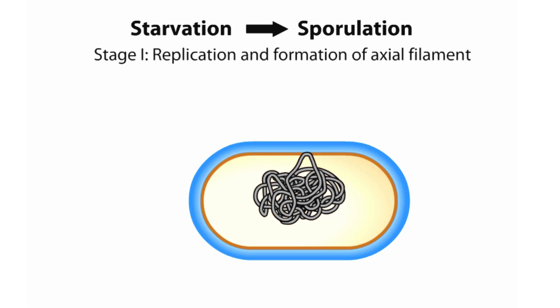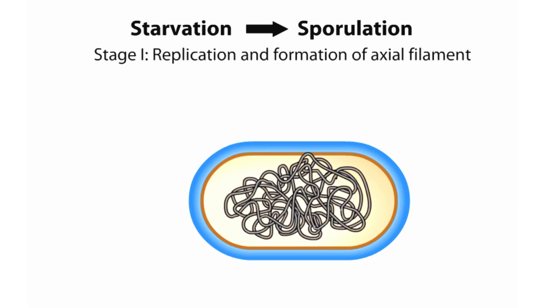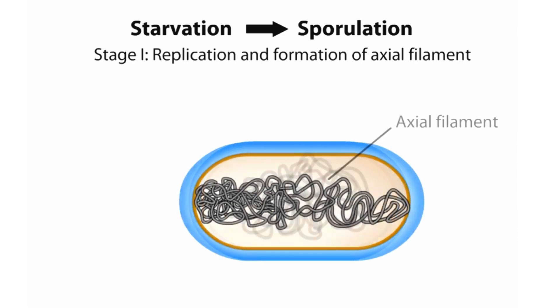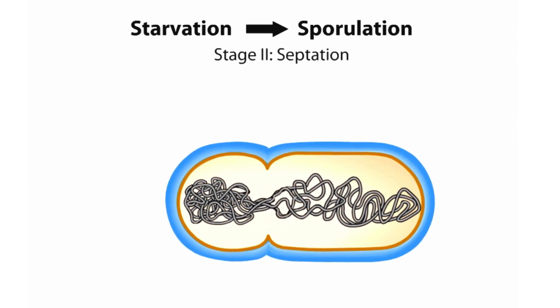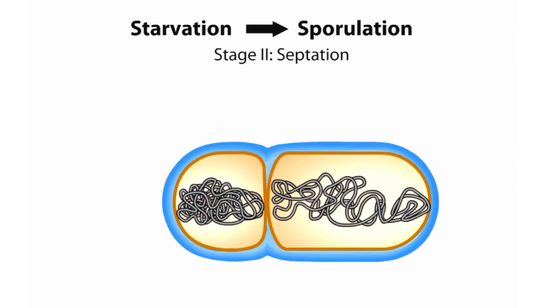Stage 1 involves replicating and stretching the DNA into a long axial filament that spans the length of the cell. Ultimately, one of the polar division sites wins out, and Stage 2 is where septation occurs, dividing the cell into two unequal compartments: the forespore, which will ultimately become the spore, and the larger mother cell from which it derived.